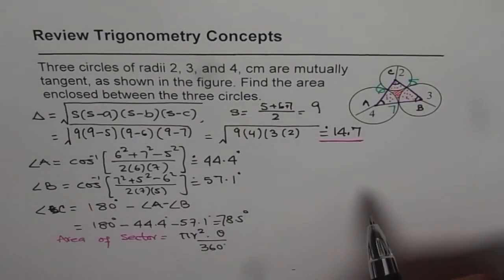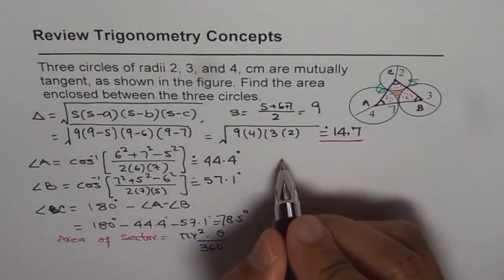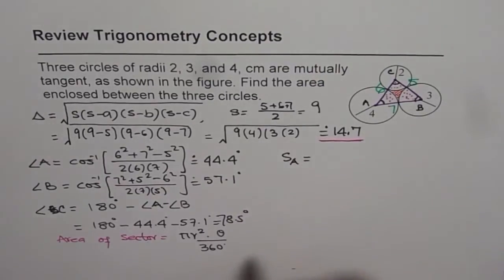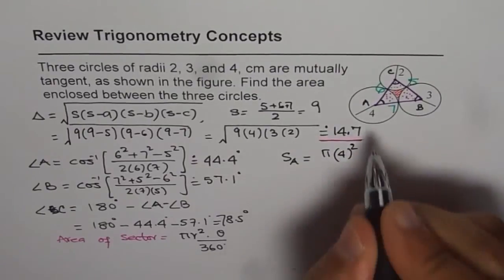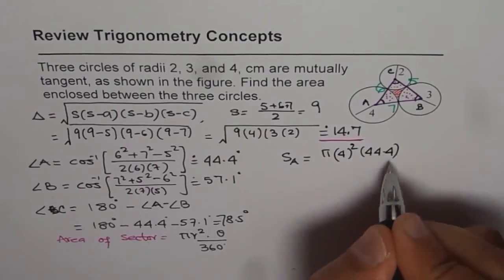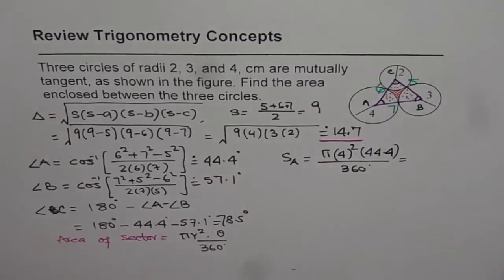We will use this formula to find area of the sectors, all the three sectors one by one. So for the first circle which is of radius 4, let us say area of the sector SA should be equal to pi times 4 square and angle A 44.4 divided by 360 degrees. That gives us pi times 4 square times 44.4 divided by 360 gives us 6.19. So we can write this as 6.2.